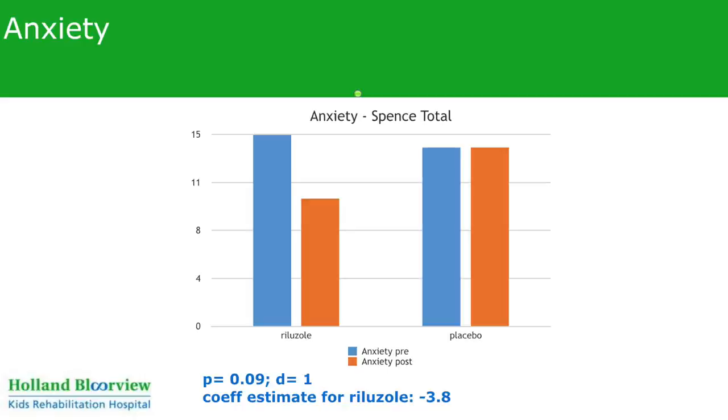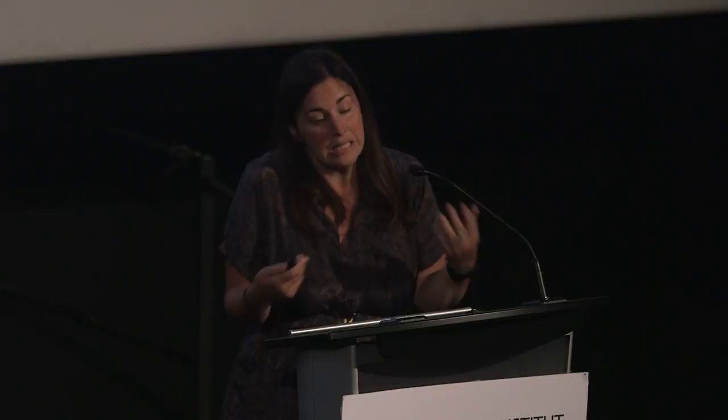Sometimes we learn that things don't work, and that's important too. From neuropathology we had a neuroinflammation target, and we thought the easiest way to go after it in very young kids was to give very high doses of omega-3 fatty acids. We ran a randomized controlled trial — it did nothing. So we can tell parents they're free to use omega-3 fatty acids, but in our hands there is no enhancement of learning with omega-3 fatty acids in toddlers.